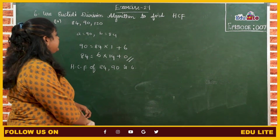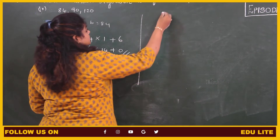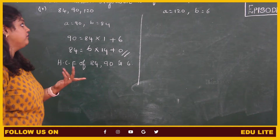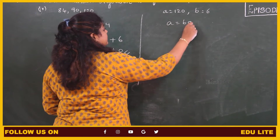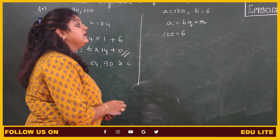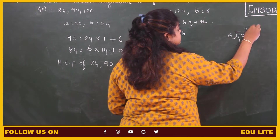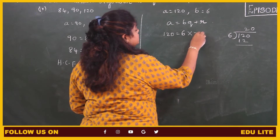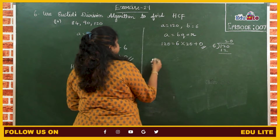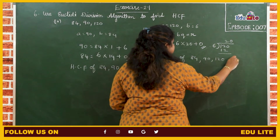Now what we have to do is find the HCF of 6 and the third number, which will be the HCF of all 3 numbers. So A equals to 120, B equals to 6. We have to consider the largest number as the value of A. Substituting it in A equals to BQ plus R, which is Euclid's division lemma: A value is 120, B value is 6. 120 when it is divided by 6: 20 times, remainder 0. So 6 into 20 plus 0. We got the remainder as 0, therefore 6 is the HCF of all 3 numbers. So HCF of 84, 90, and 120 is 6.